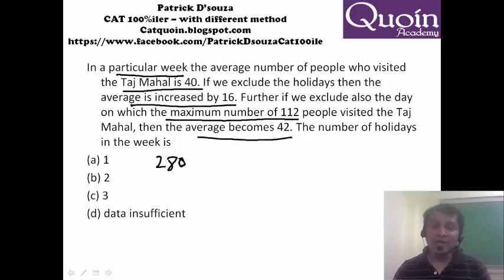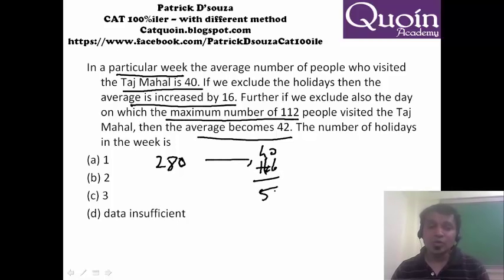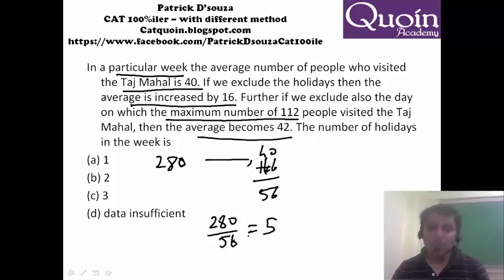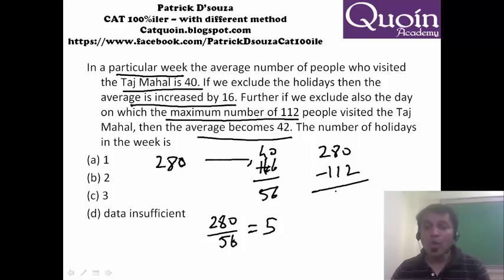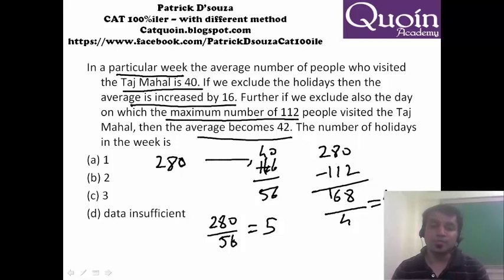When holidays are removed, the average increases by 16, so the new average becomes 40 plus 16, which is 56. So the number of days becomes 280 divided by 56, giving us 5 days. Just to confirm, you can go further: 280 minus 112 removes the maximum number, giving 168. Now 168 for 4 days gives 42. Confirmed — one method done.